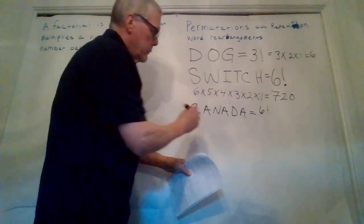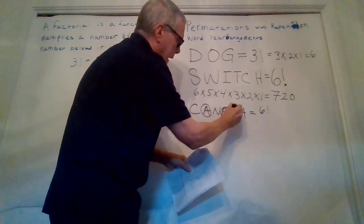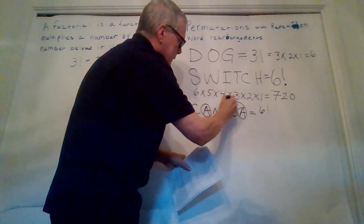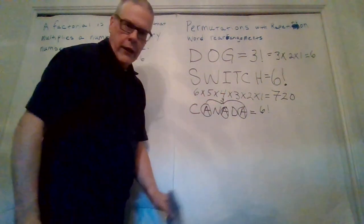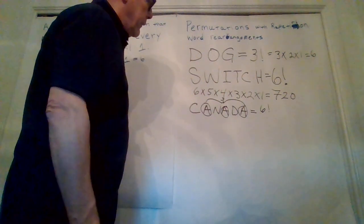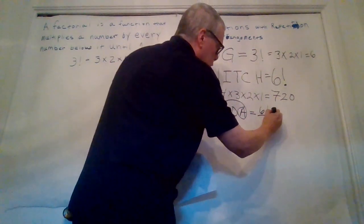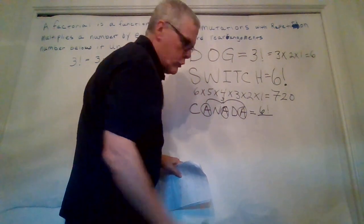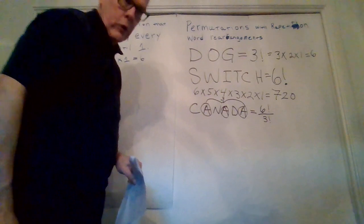But we're going to have to do something different because we have repeated letters. We have A, A, and A. So we'll see that we have 3 letters that repeat in the word Canada. So when we do this, we're going to have to multiply the number of total words by the number of the 3 factorial.